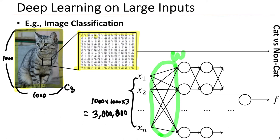If we just use a deep neural network with, say, 100 hidden nodes, the size of the parameter matrix W would be about 3 million times 100 — extremely large and very hard to train. This is essentially infeasible, so we need a more clever way to deal with this. This is the starting point of the convolutional neural network.